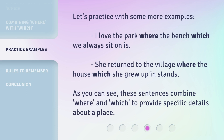Let's practice with some more examples. 'I love the park where the bench which we always sit on is.' 'She returned to the village where the house which she grew up in stands.' As you can see, these sentences combine 'where' and 'which' to provide specific details about a place.